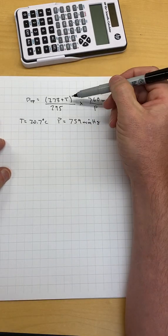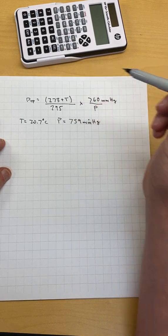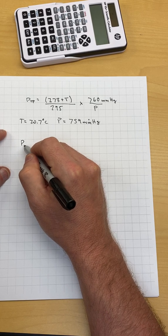So this one's pretty simple. You just have to plug the formula in. You have to make sure the temperature is in Celsius and the pressure is in millimeters of HG.